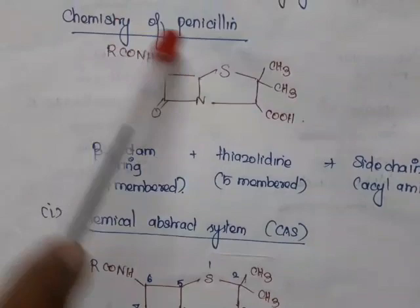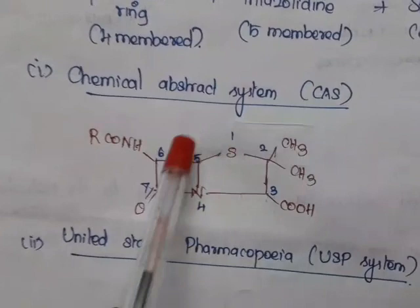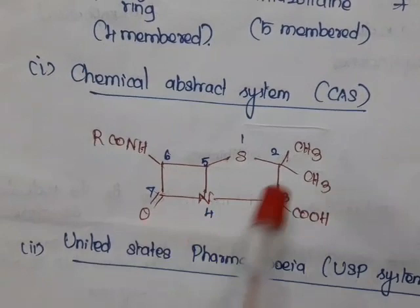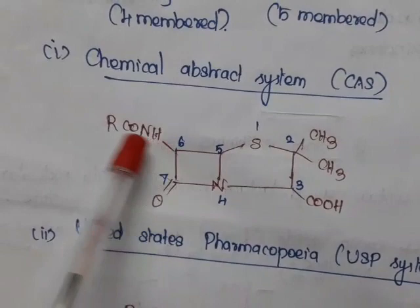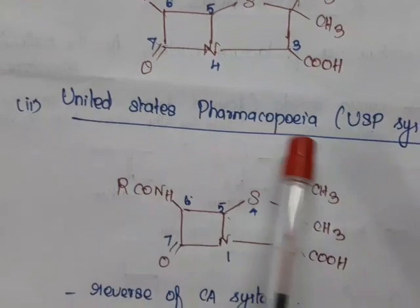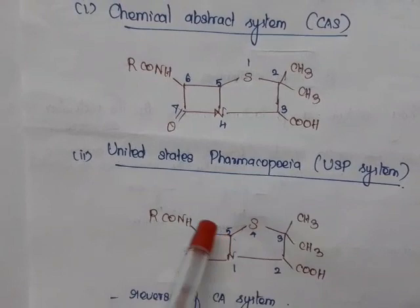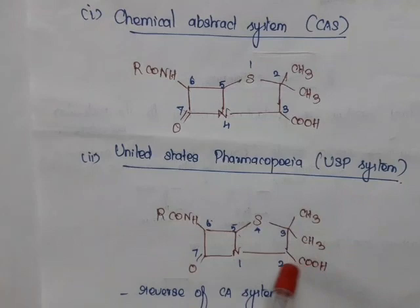Now we'll see the numbering. According to the Chemical Abstracts (CAS) system, the priority order is O, S, N, C — so sulfur gets higher priority and is numbered first: 1, 2, 3, 4, 5, 6, 7. In the second position we have dimethyl groups, in the third carboxylic acid, and in the sixth the acylamino group. According to the USP system, nitrogen gets higher priority, so nitrogen is position 1, and the dimethyl groups are at position 3, carboxylic acid at position 2, and acylamino at position 6.